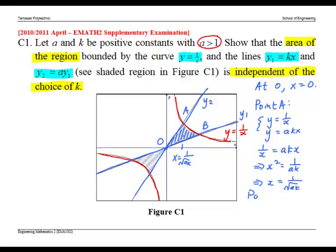Next, we find point B. Point B is the intersection of Y equals 1 over X and Y1, which is KX. Again, solving, we have X equals 1 over square root K. Therefore, at point B, X is equal to 1 over square root K.